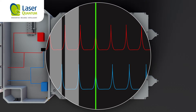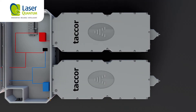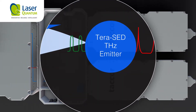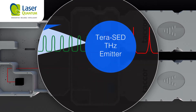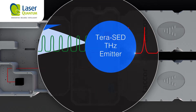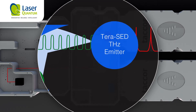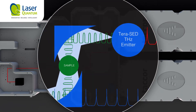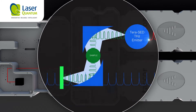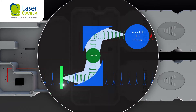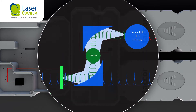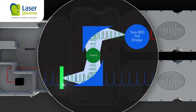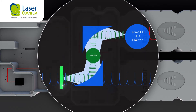again, starting the next measurement. One application of the ASOPS technique is terahertz time-domain spectroscopy. Here, the pump pulse illuminates the TeraSet3 large-area terahertz emitter, which launches a terahertz pulse into the interaction area.